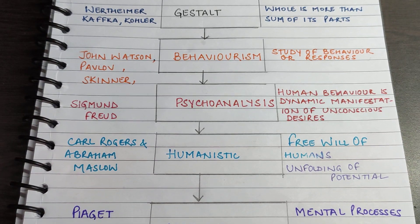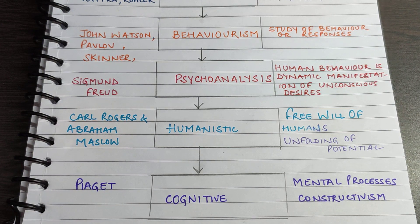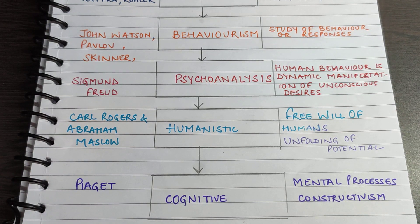Next is the humanistic approach, advocated by Carl Rogers and Abraham Maslow. They emphasized the free will of human beings, saying that people are free to do whatever they choose and their actions are not predetermined by any force. Human beings strive to grow and unfold their potential. If we lose our goal, purpose, and direction in life, we become completely cut off from society. As a student, you should know your inner potential and how you can achieve the best in life — one must have a goal and make life worthwhile.